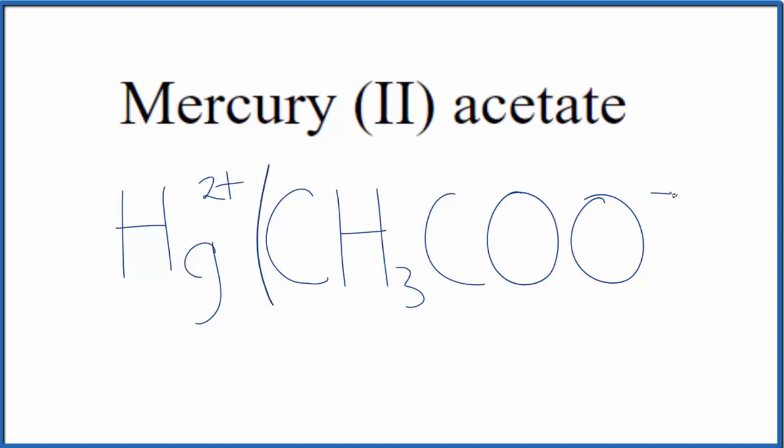If we had two of these acetate ions like this, two times 1-, that's 2-, that would give us a net charge of zero: 2- and 2+.